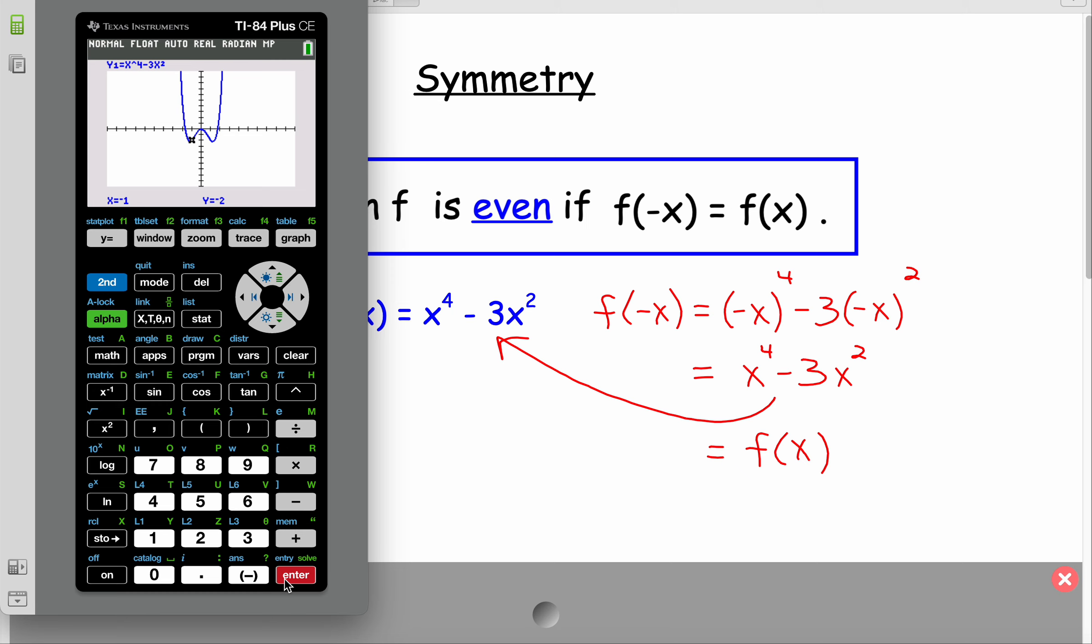So for example, if I plugged in, let's say 3. So when I trace it at 3, I would get an output of 54. Then at negative 3, I should also get 54. And that indeed is the case.